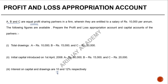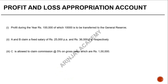Please note it is not 10% per annum — this is one of the catches which might come across in some questions. If 'per annum' is not given, you can make a working assumption that it is 10% flat on the gross amount, or 12% flat on the gross amount. Profit during the year was $1,00,000, of which $10,000 is to be transferred to the general reserve. A and B claim a fixed salary of $25,000 and $36,000 per annum respectively. C is allowed commission at 5% on gross sales of $1,00,000, which gives $5,000.